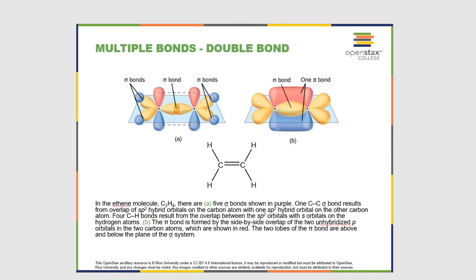In this section we want to combine the two ideas that we learned in the previous sections, which are sigma and pi bonds as well as hybridization.